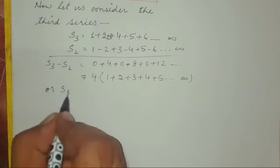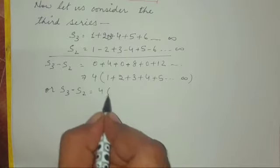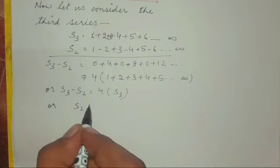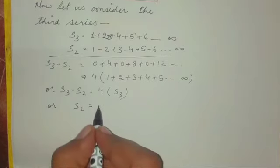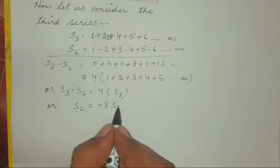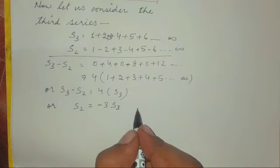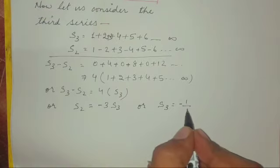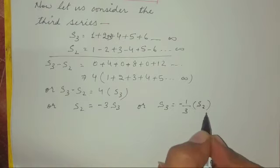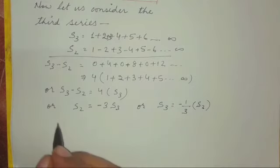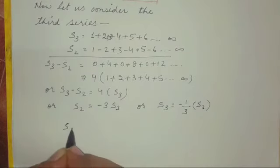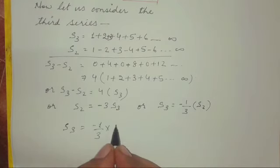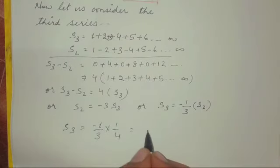If we rearrange this equation, we get S2 equals minus 3 times S3, or S3 is equal to S2 divided by negative 3, or negative S2 by 3. And the value of S2 that we have already calculated earlier, which was 1 by 4, so S3 is equal to minus 1 by 3 times 1 by 4, which will give us minus 1 by 12.